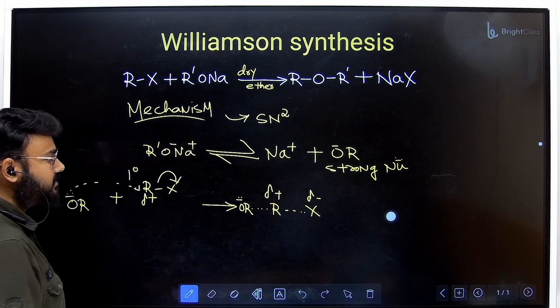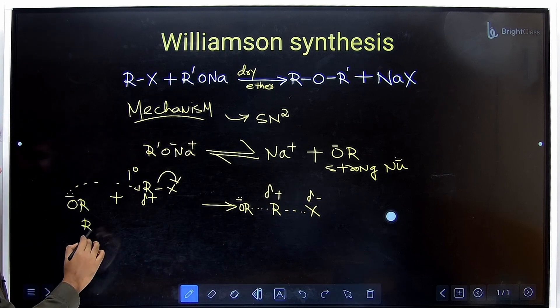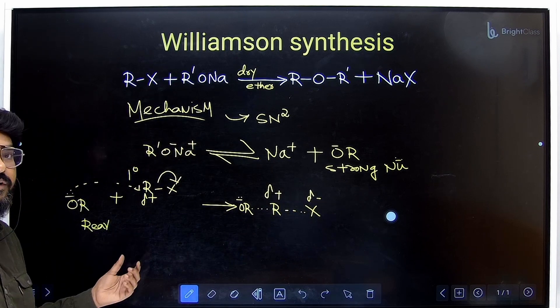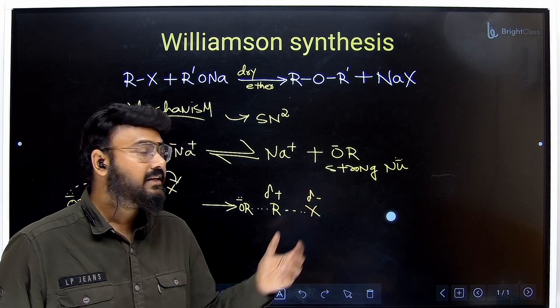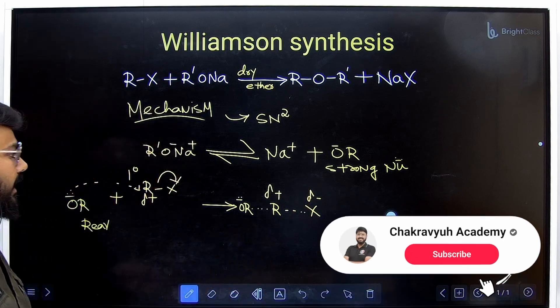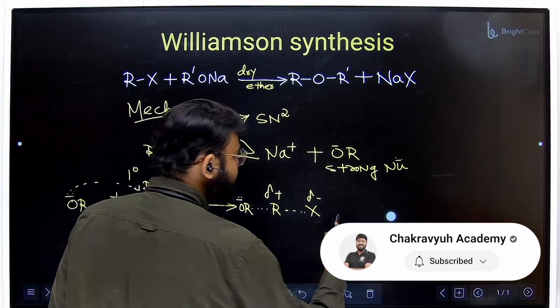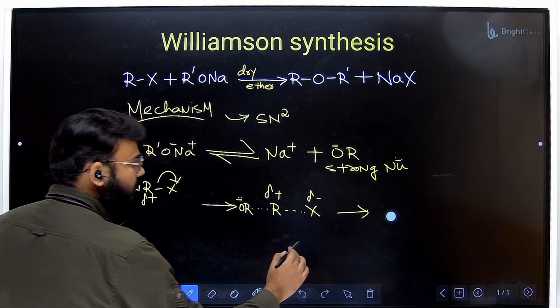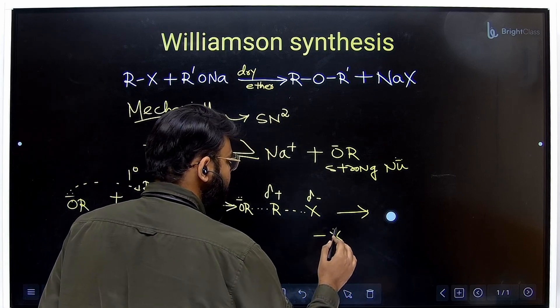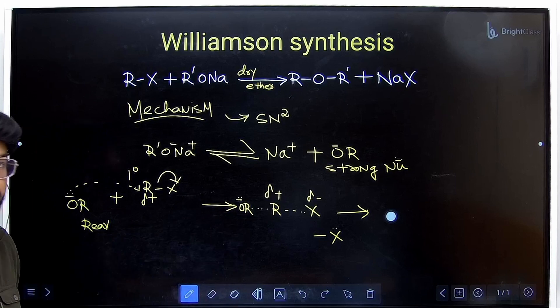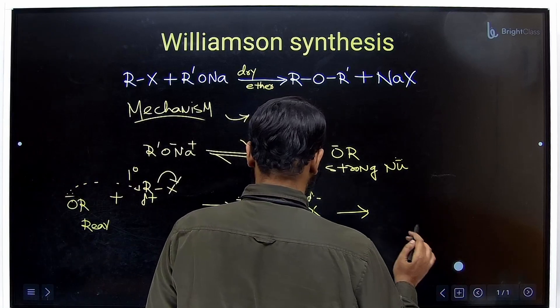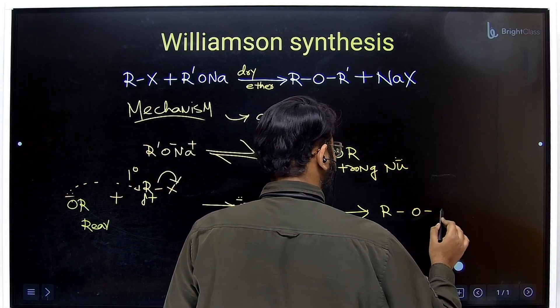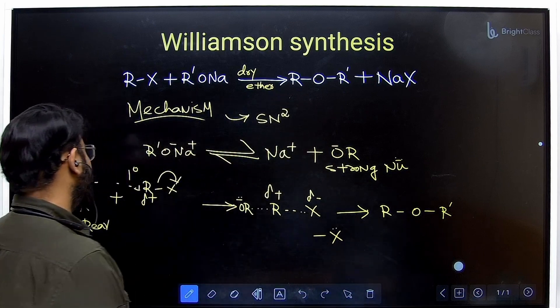So this is your transition state. Remember, the attack is only possible from rear side and you will get only inversion because it is SN2. And now finally what do we get? Finally the halogen will be removed and we will see we are getting R-O-R'. So we will be getting the ether.